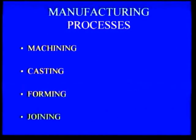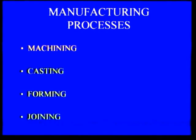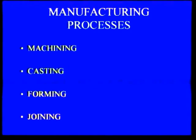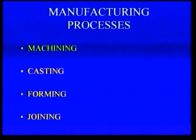There are different manufacturing techniques available in real life. Those manufacturing techniques can be grouped as machining, casting, forming and joining. In machining, excess material is removed and required shape is obtained. In casting, liquid metal is poured in the mould to get the required shape. In forming, the material is deformed into the required shape by applying force. Welding and riveting come under the category of joining methods.